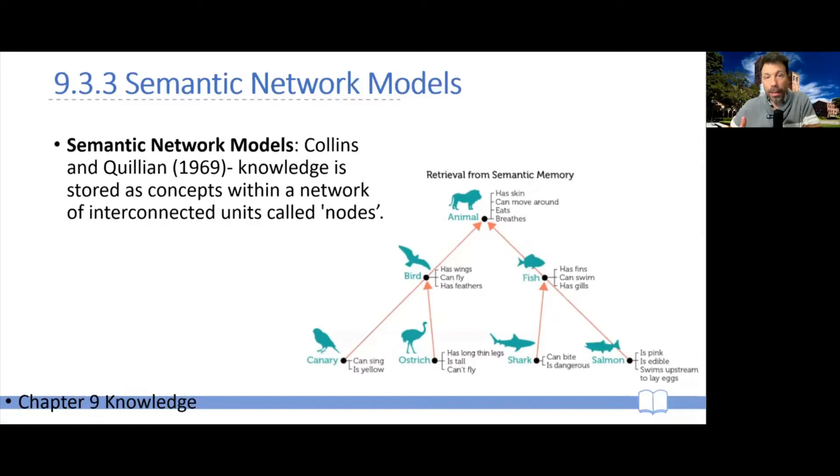Now, the idea behind this model is that knowledge is stored as concepts within a hierarchical network of interconnected nodes, which is what you're seeing on the side. So there might be, for example, a mother node, animal, which has two daughter nodes, bird and fish, and bird has two daughter nodes, canary and ostrich, etc.